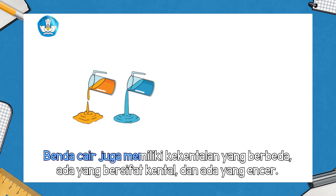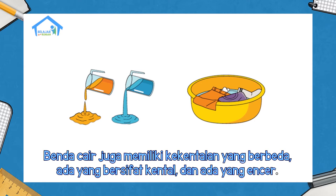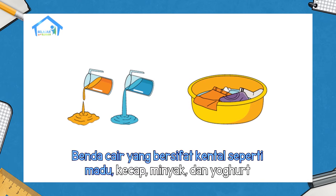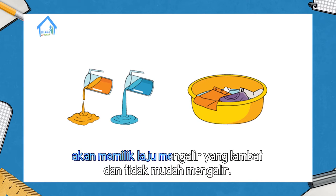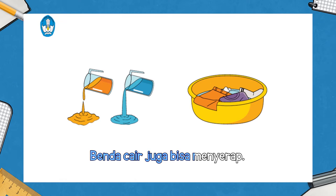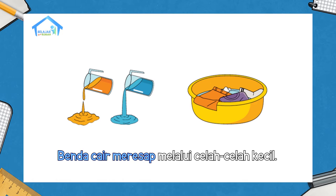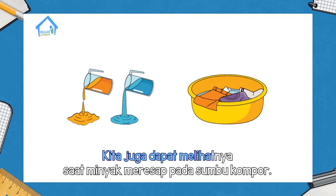Benda cair juga memiliki kekentalan yang berbeda. Ada yang bersifat kental dan ada yang encer. Benda cair yang bersifat kental seperti madu, kecap, minyak, dan yogurt akan memiliki laju mengalir yang lambat dan tidak mudah mengalir. Sebaliknya, benda cair yang bersifat encer seperti air akan mengalir lebih cepat. Benda cair juga bisa menyerap. Saat mencuci pakaian, air meresap pada pakaian yang kita rendam. Benda cair meresap melalui celah-celah kecil. Kita juga dapat melihatnya saat minyak meresap pada sumbu kompor.